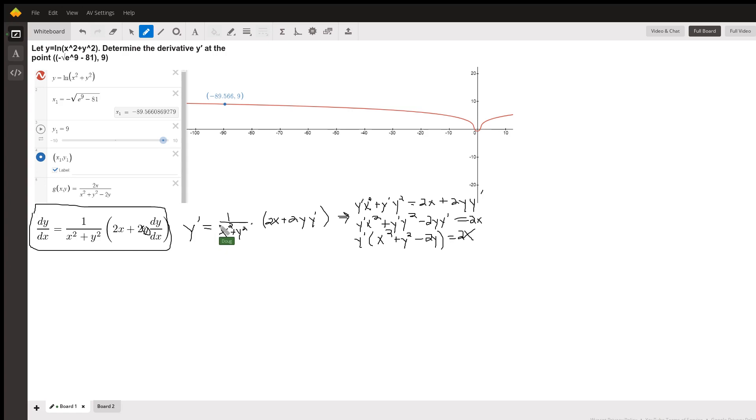The idea is to multiply both sides of this equation by x squared plus y squared, moving towards isolating the terms containing y prime. So y prime times this expression is y prime x squared plus y prime times y squared equals 2x plus 2y y prime.